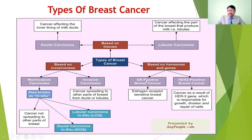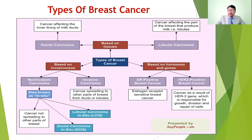Based on hormones: ER-positive breast cancer means estrogen receptor positive. HER2-positive breast cancer is related to hormonal imbalance with the human epidermal growth factor receptor. These are the different types of breast cancer, which we will now discuss one by one.